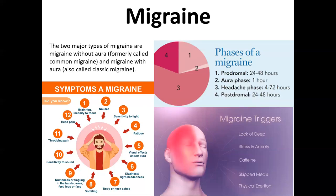Chronic migraine affects approximately one tenth of all migraine sufferers and is extremely disabling with severe impact on quality of life. Common migraine triggers include lack of sleep, chronic stress, and excessive caffeine intake. The main symptoms of migraine are shown here, and the typical pain localization covers half of the head.